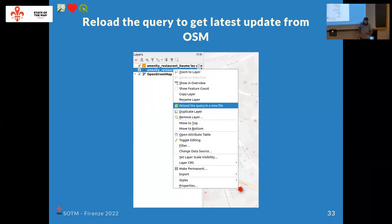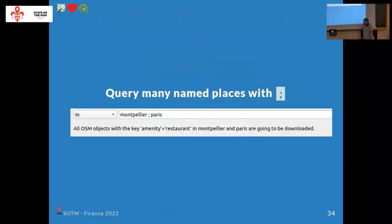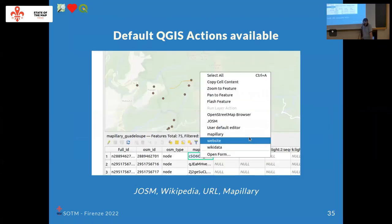Some quick tips: if you have a layer downloaded with QuickOSM, you can right-click on it and reload the query into a new file. Since the OpenStreetMap database is updated every minute, you can right-click and reload to create a new layer with the same extent but with the latest data. You can also search many places at the same time. Default actions are provided in QuickOSM — if you right-click in the attribute table or on a feature on the map, QuickOSM will scan some fields. If it finds Wikipedia, Wikidata, a URL, or Mapillary links, it will propose to open them.